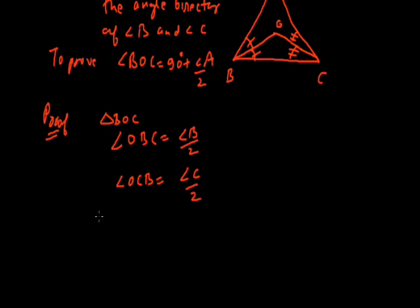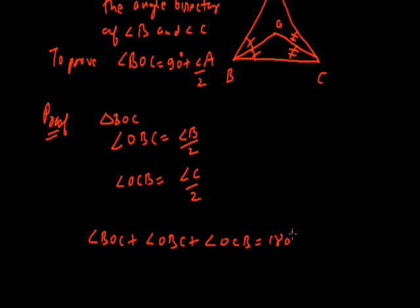In triangle BOC, we apply the angle sum property: angle BOC plus angle OBC plus angle OCB equals 180 degrees. Angle OBC is half of angle B and angle OCB is half of angle C, so angle BOC plus half of B plus half of C equals 180 degrees.